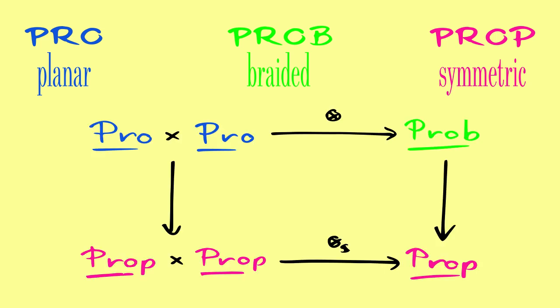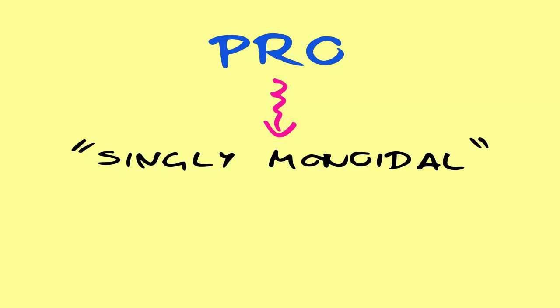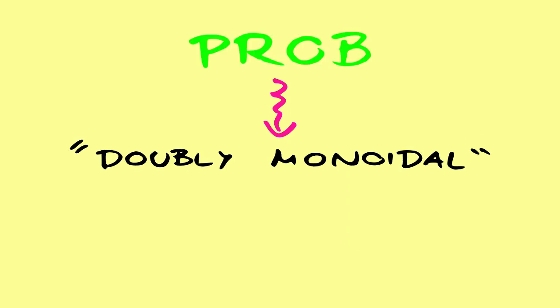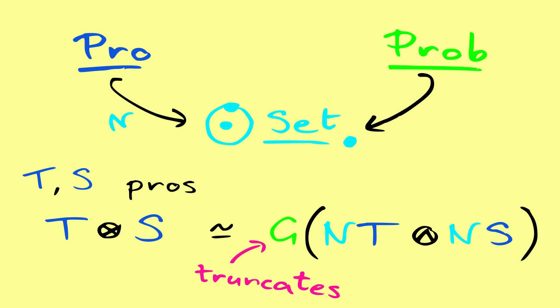The tensor product does not restrict to either. But there is a kind of external product of pros producing a prob. It is compatible with the tensor product of props, in the sense that the tensor product of two props that are free on pros is the free prop on their external product. Now, if you are familiar with the periodic table of n-categories, a pro as a singly monoidal theory corresponds to a bicategory with one zero-cell, but a prop as a doubly monoidal theory corresponds to a tricategory with a single zero-cell. Using this idea, we can define embeddings of pros and probs into pointed diagrammatic sets. What I proved is that the external product of pros arises as a low-dimensional truncation of the smash product of their embeddings.